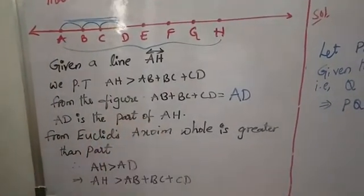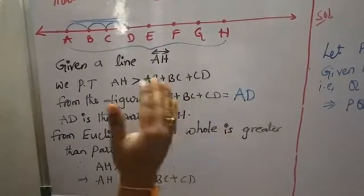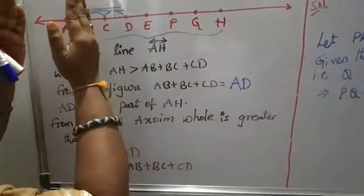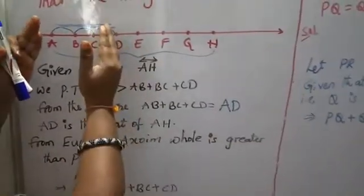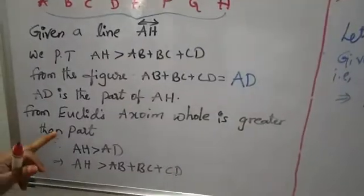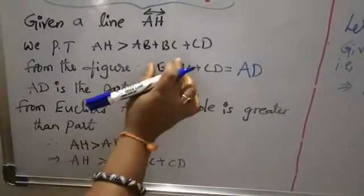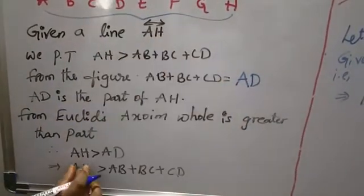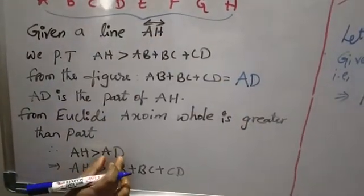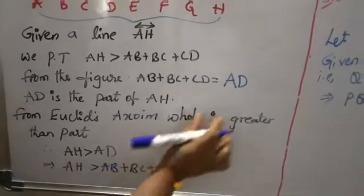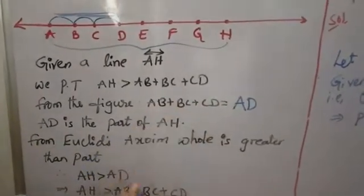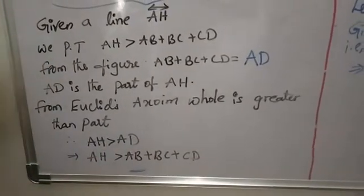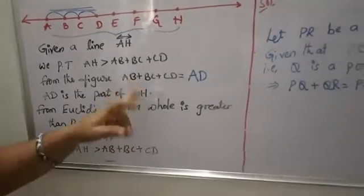From Euclid's axiom, the whole is always greater than the part. So AH is greater than AD. And we know that AD equals AB plus BC plus CD. Therefore our proof is complete: AH is greater than AB plus BC plus CD.